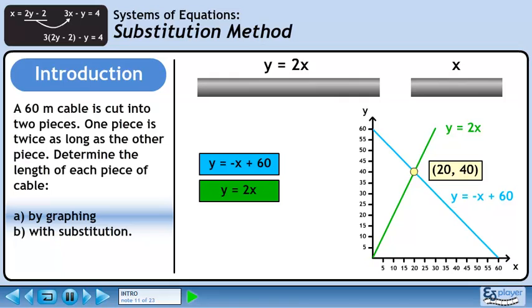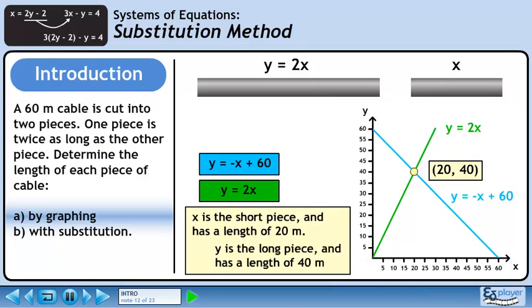The point of intersection is the ordered pair 20, 40. X is the short piece and it has a length of 20 meters. Y is the long piece and it has a length of 40 meters.